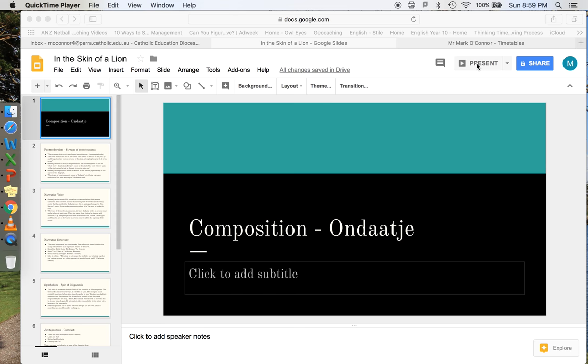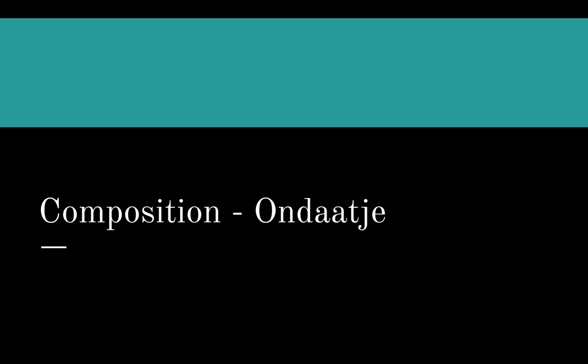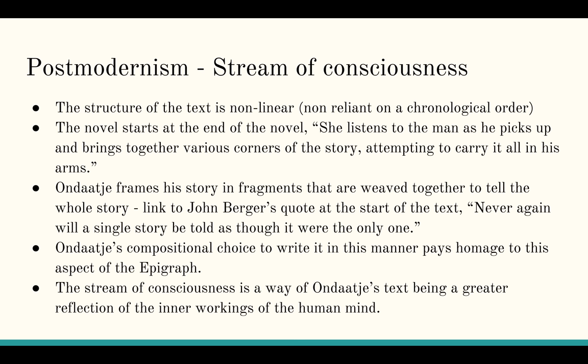What we're going to do here is look at this presentation on the composition of Ondaatje's work. I'll focus that first slide on composition and Ondaatje because in the critical study, what you need to really focus on is him as the author and what he does in his composition. Composition could be a range of different things — not just technique, but the structure of his text and anything he does intentionally to create meaning. The first thing you might want to write about is the fact that it's a postmodern text.